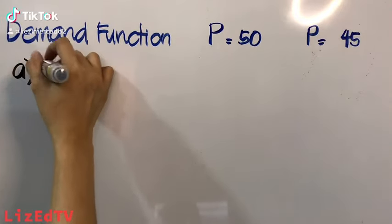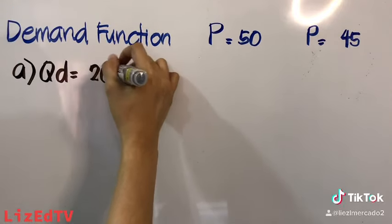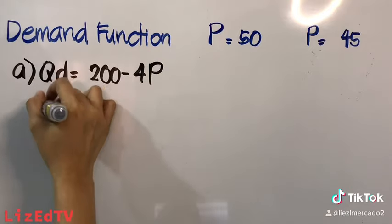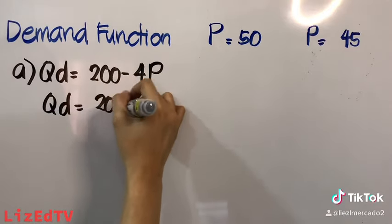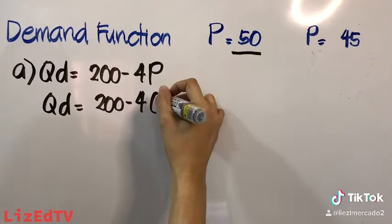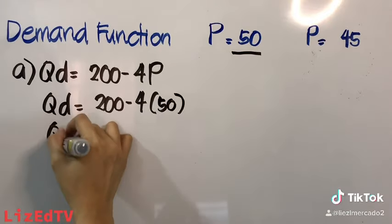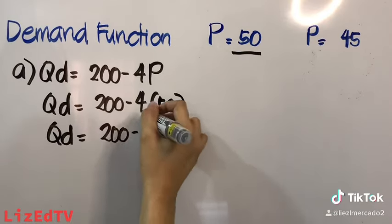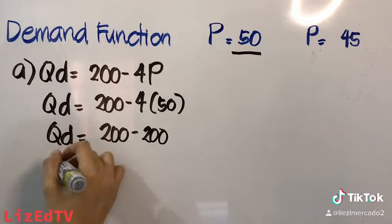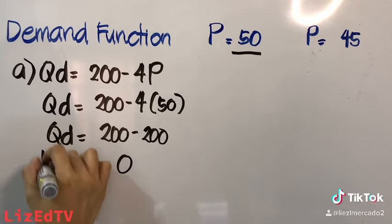Let us compute the demand function. Let us use QD equals 200 minus 4P. Substituting the first value, which is 50: QD equals 200 minus 4 multiplied by 50, which equals 200 minus 200. QD equals 0.